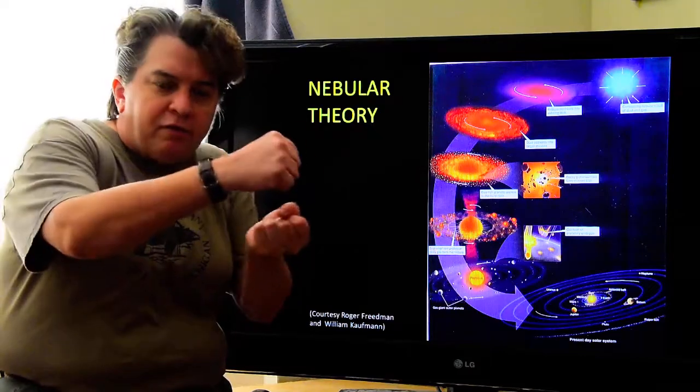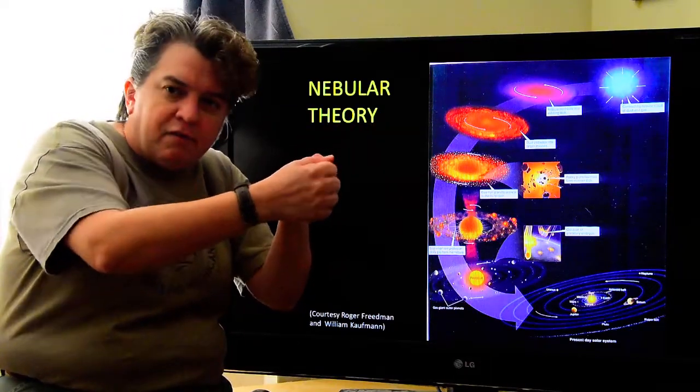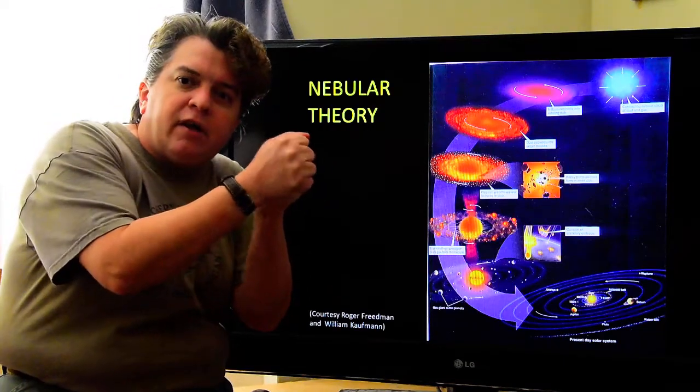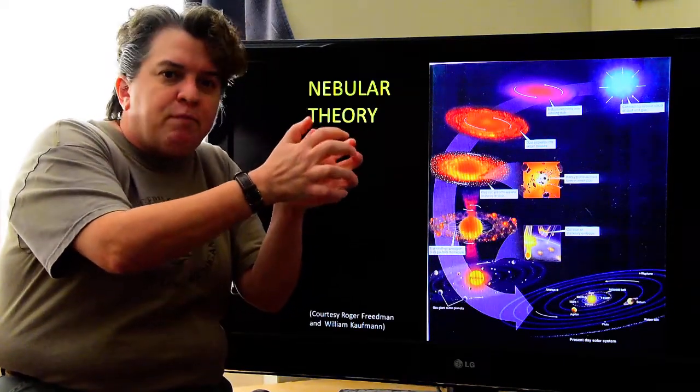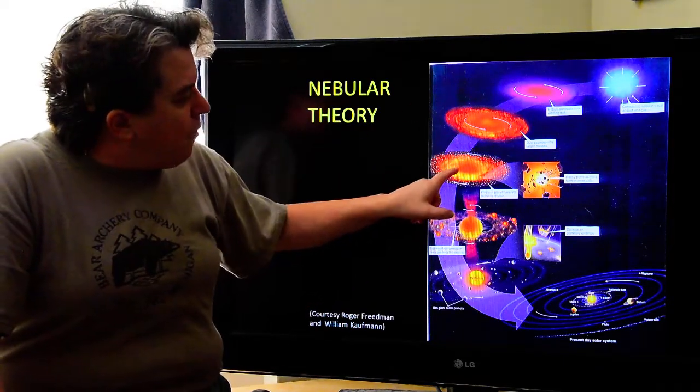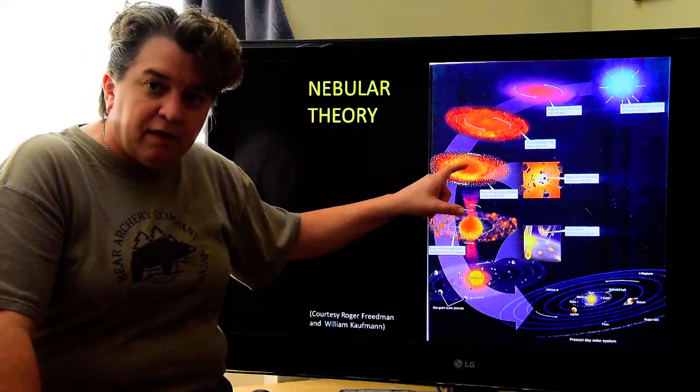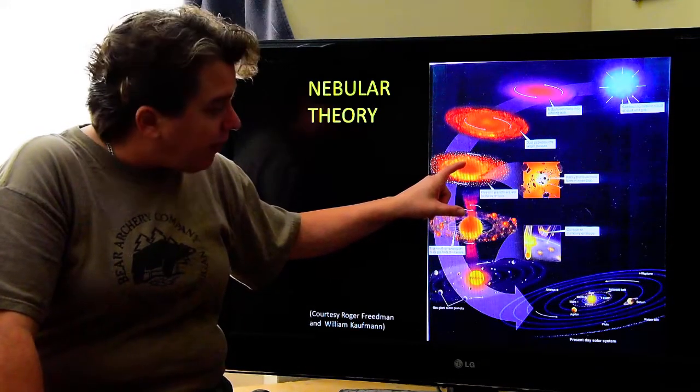And this nebula kind of contracts into this spinning disk. And this dust and gases continue to hit each other in that spinning disk. And when they hit each other, they stick together. And so, these particles start getting bigger and bigger and bigger and bigger. Now, most of the mass goes to the center of this rotating disk, and it starts getting really, really hot there.